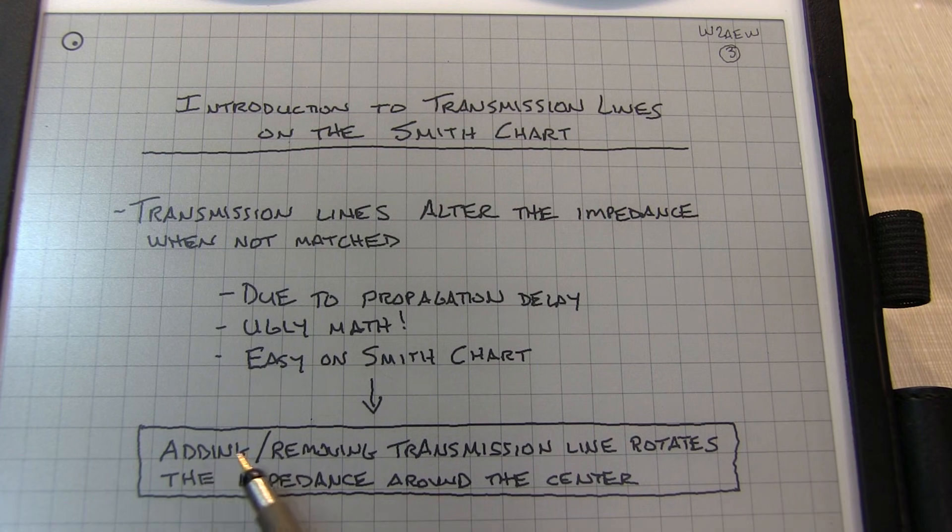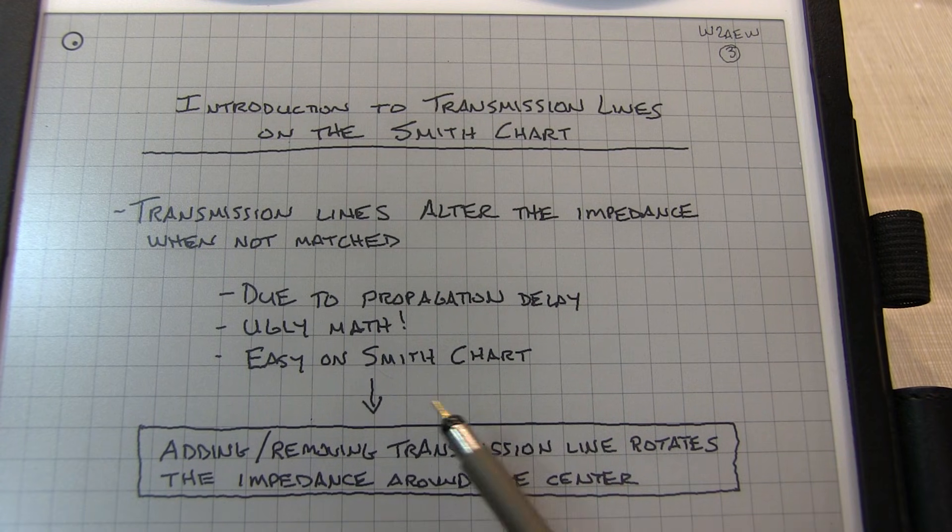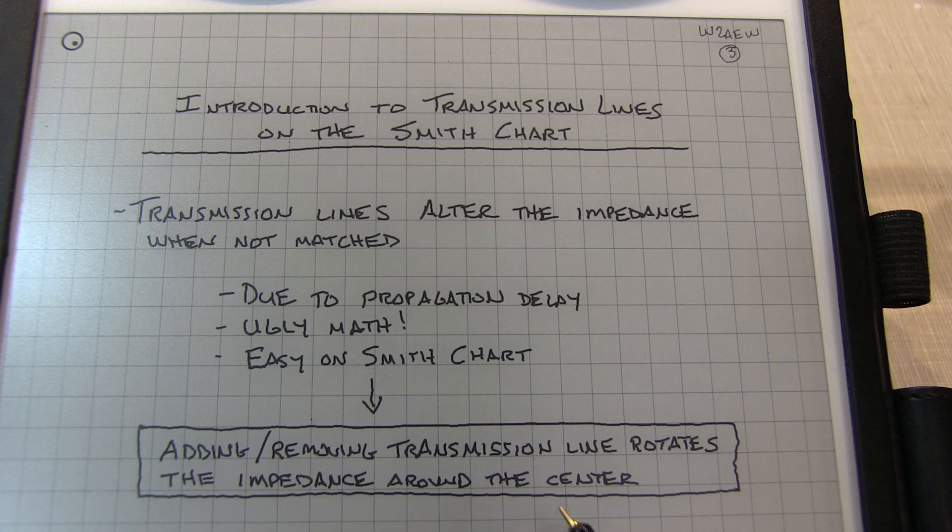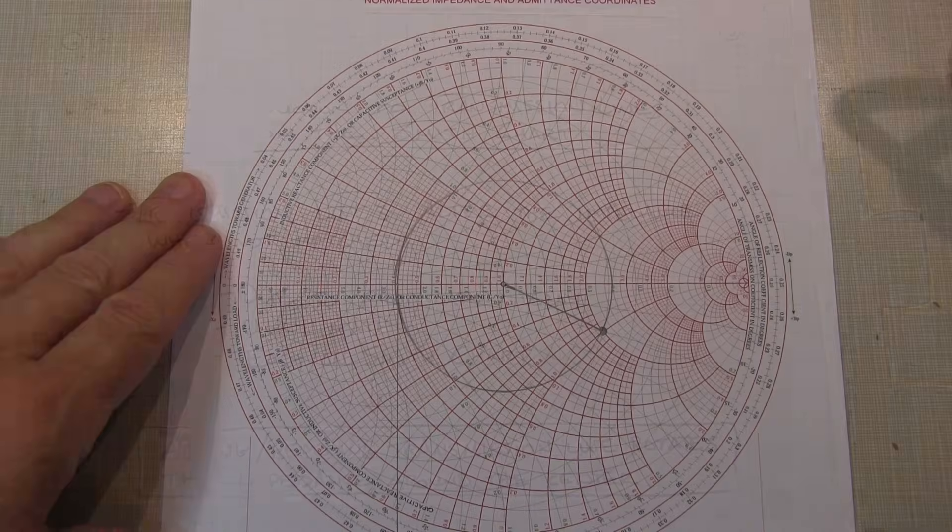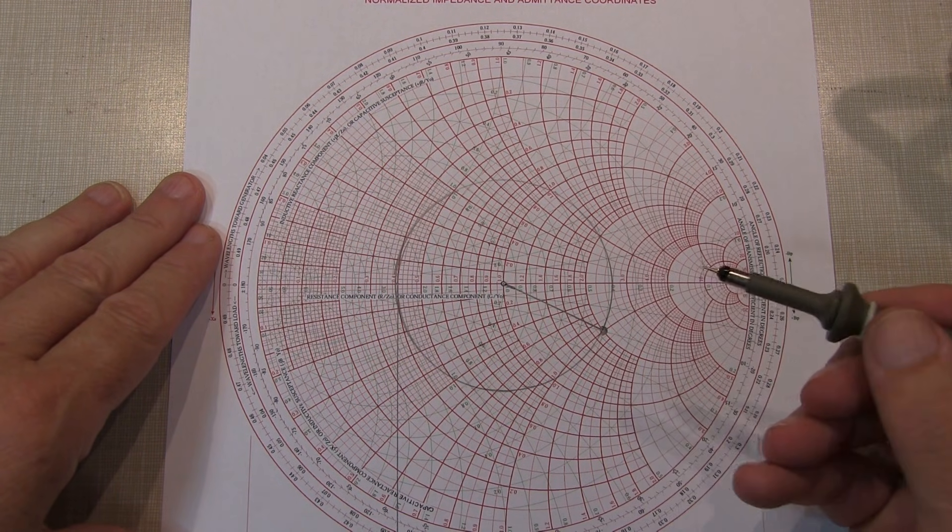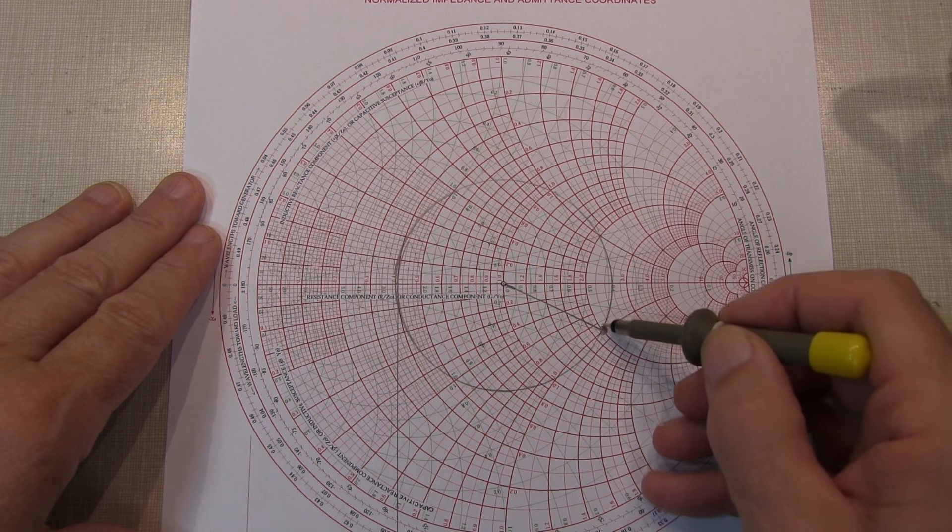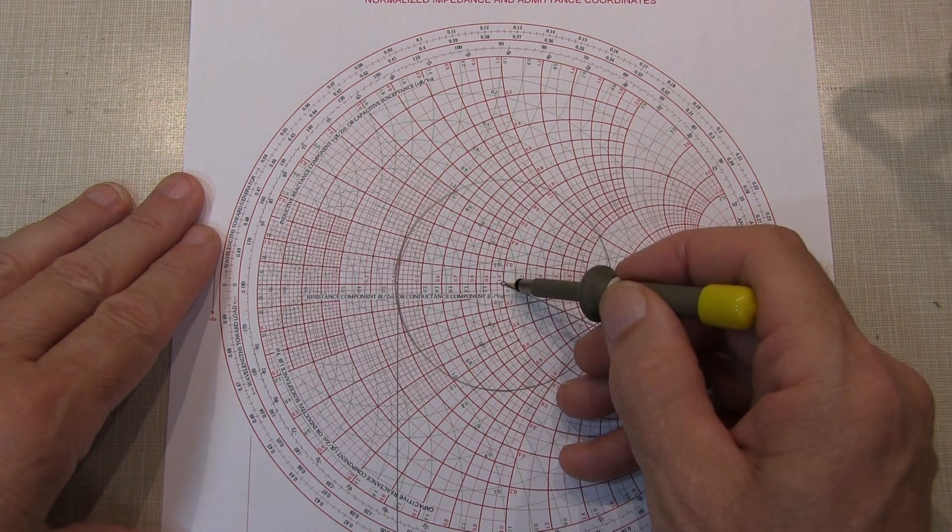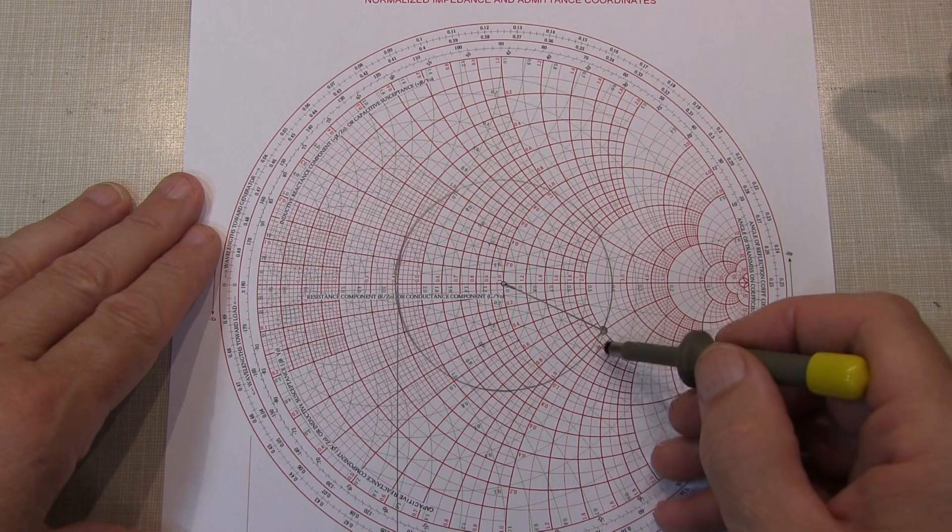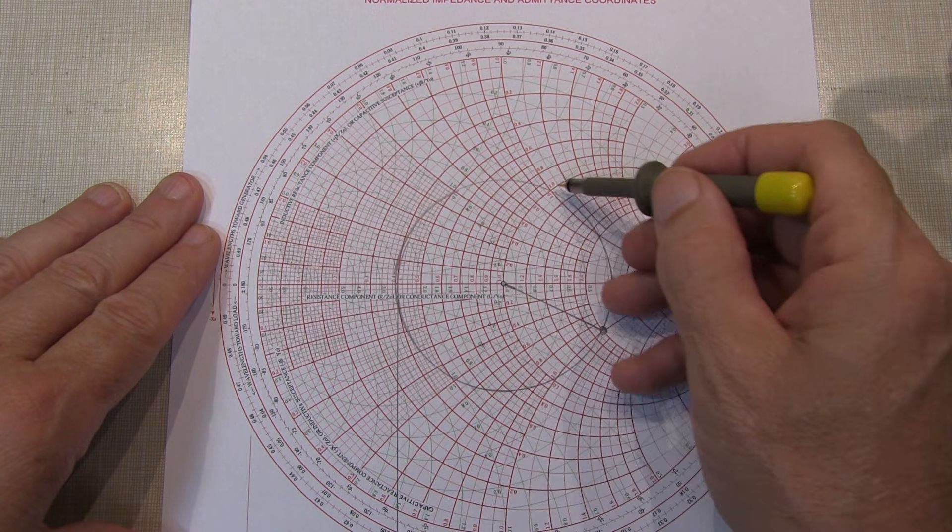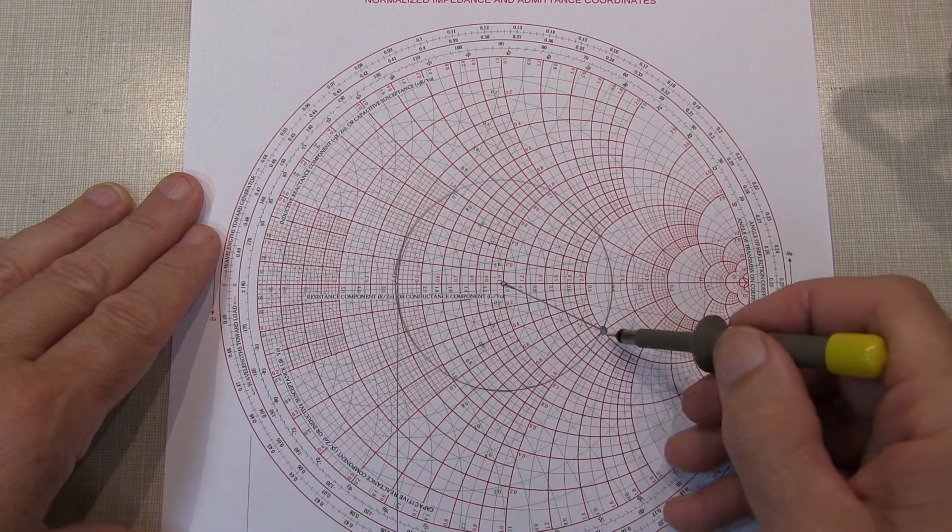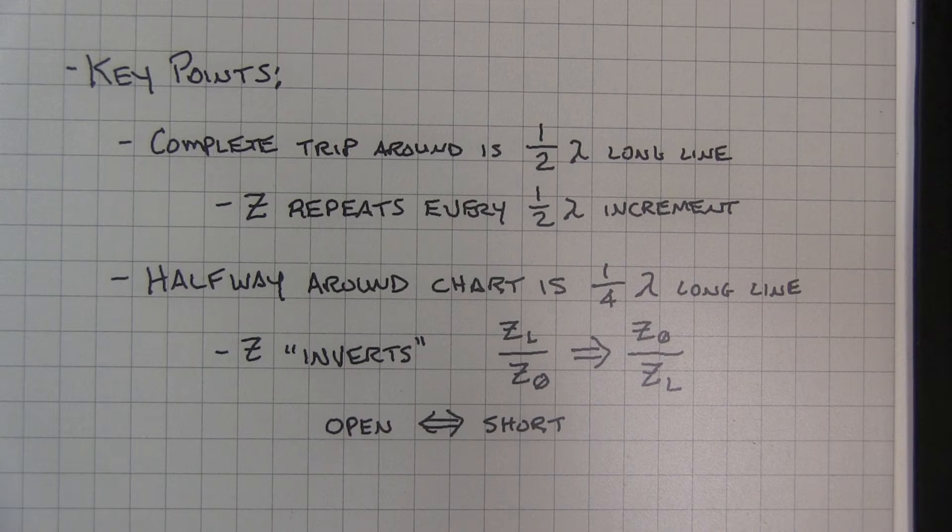What we'll see on the Smith chart is that adding or removing a transmission line essentially rotates the impedance around the Smith chart, equidistant to the center. It essentially draws a circle around the center with a radius equal to the radial distance of that load impedance to the center. So visually it looks like this. The load impedance we're seeing at the antenna is right here. This circle inscribed centered around the center describes all the impedances that are possible depending on the length of the coax.